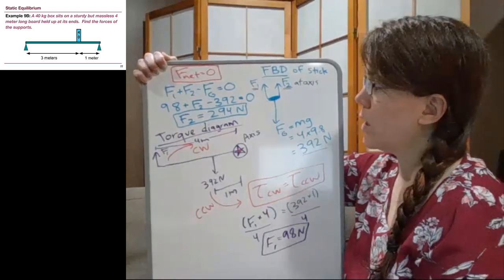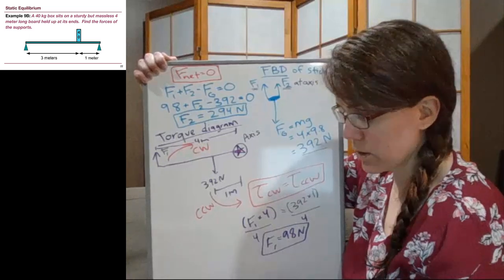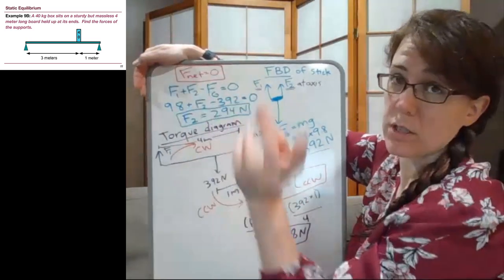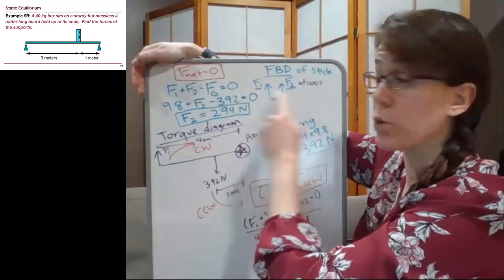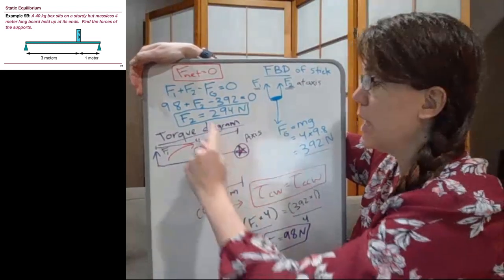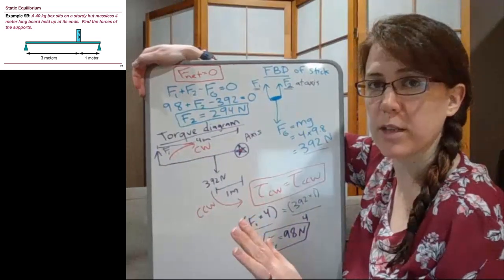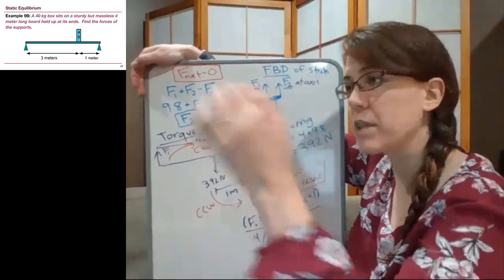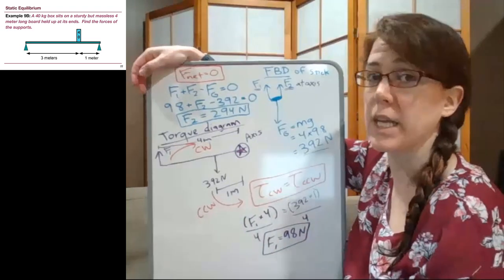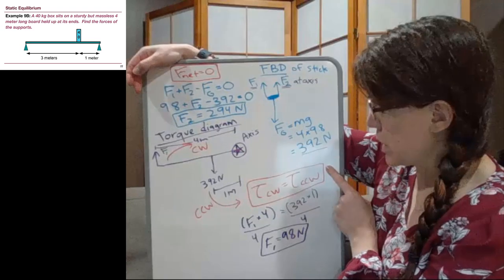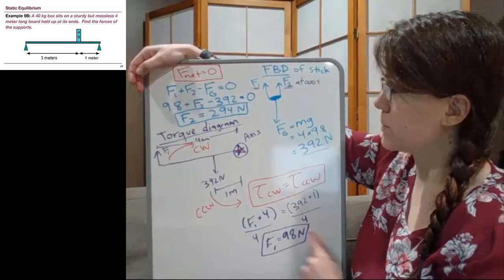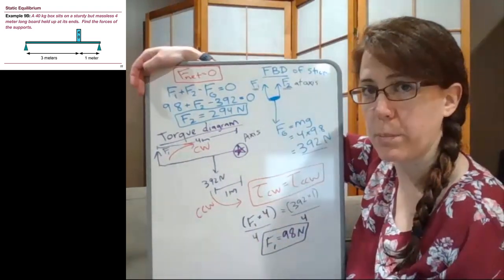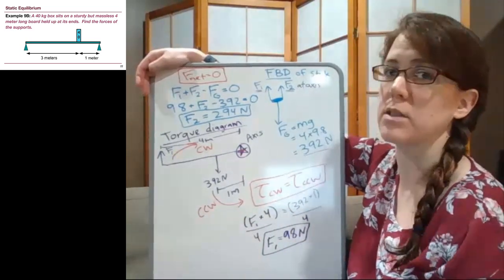To summarize: we used the original picture, the force diagram showing all forces, and the torque diagram — following a five-step process: draw the beam, choose an axis, draw the forces, draw the distances, and determine clockwise or counterclockwise. Having many steps doesn't mean the problem is tough; it just means we don't want to forget anything. We used the torque condition to find one unknown force and the F_net equals zero condition to find the other. These examples will ramp up in difficulty while using exactly the same process.